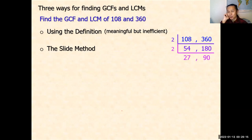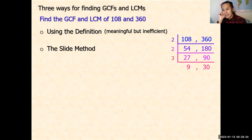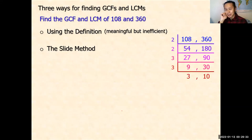Now 27 is odd and 90 is even, so 2 is no longer a common factor, but 3 is a common factor of both 27 and 90. Dividing by 3 gives 9 and 30. There is another common factor of 3, so dividing again: 9 divided by 3 gives 3, and 30 divided by 3 gives 10.